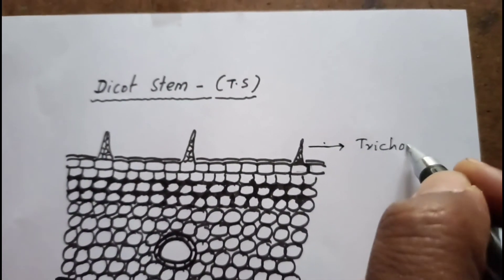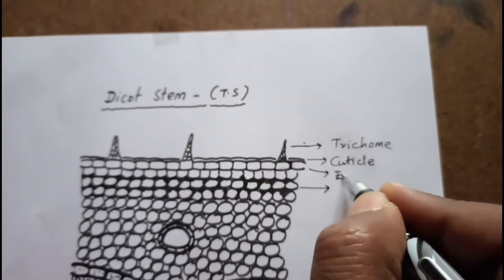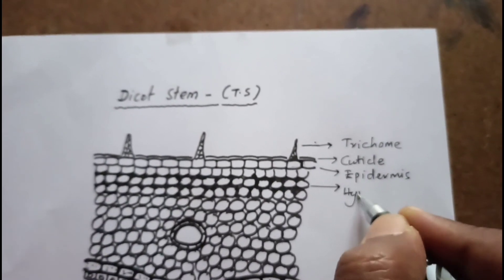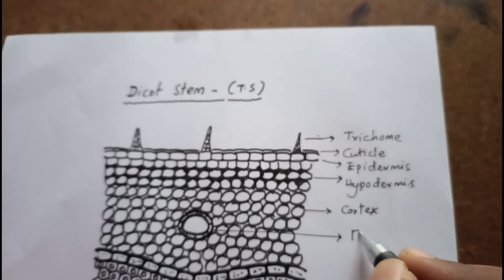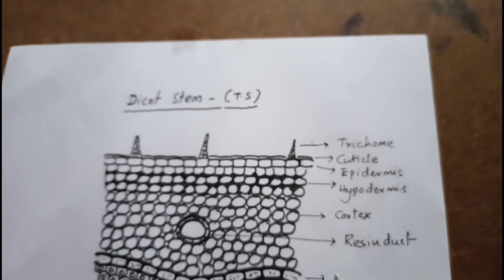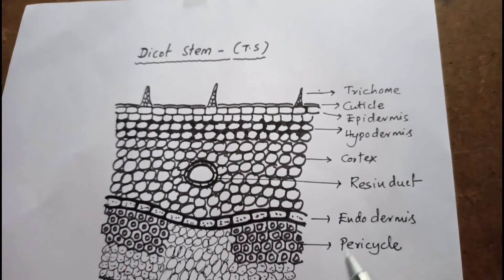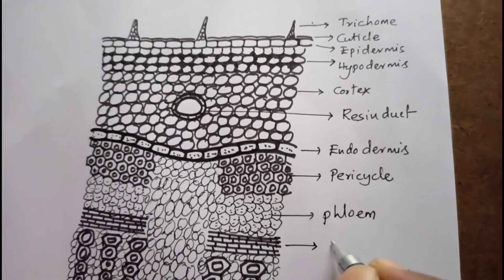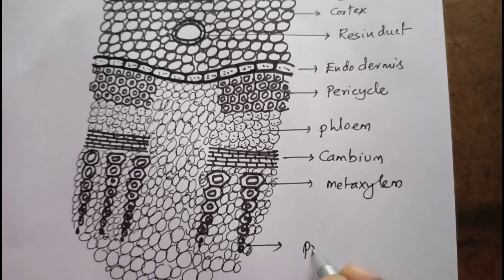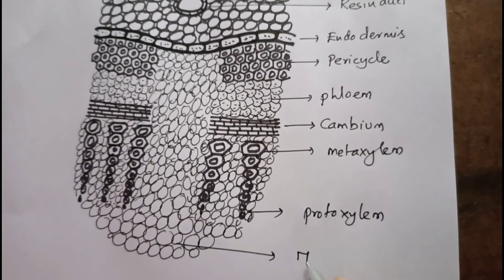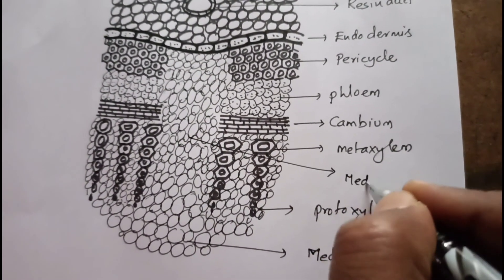Now it is labeling time. This is trichome — multicellular trichomes. This is cuticle — the outside layer of epidermis. This is epidermis. This is hypodermis. This is cortex. This is resin duct. This is endodermis. This is pericycle. This is phloem. Next is cambium. This is metaxylem. This is protoxylem. This is medulla or pith. And this is medullary rays.